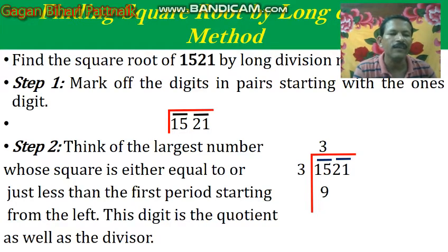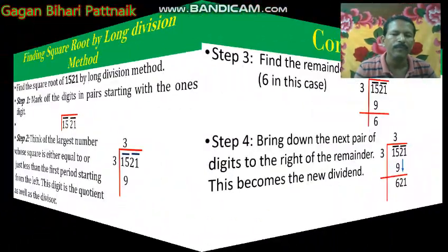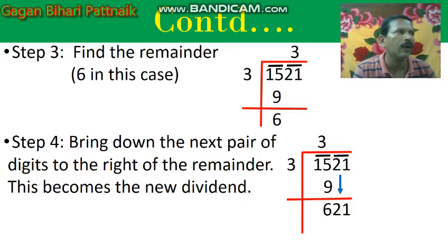Then for 4 times 4 equals 16, and 16 is greater than 15. That's why I will take 3, and I will write the quotient as 3 and the divisor as 3. Then 3 times 3 is 9. I will write 9 below 15. Then go to step number 3: find the remainder. 15 minus 9 equals 6.